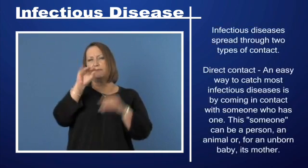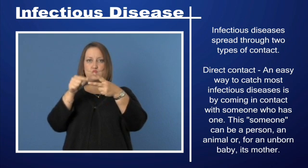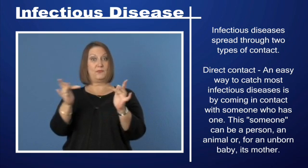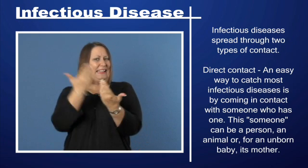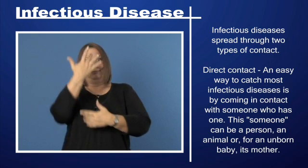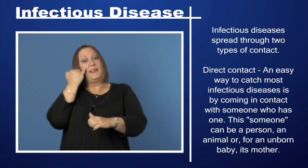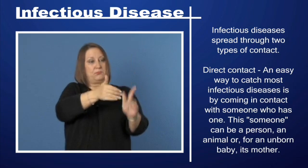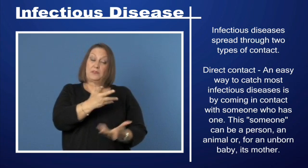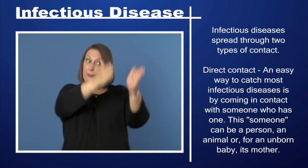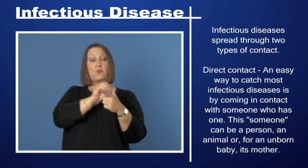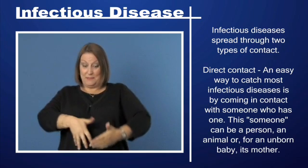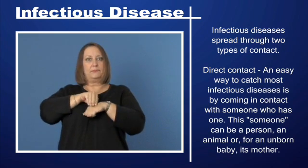Infectious diseases spread through two types of contact. Direct contact: an easy way to catch most infectious diseases is by coming in contact with someone who has one. This someone can be a person, an animal, or, for an unborn baby, its mother.